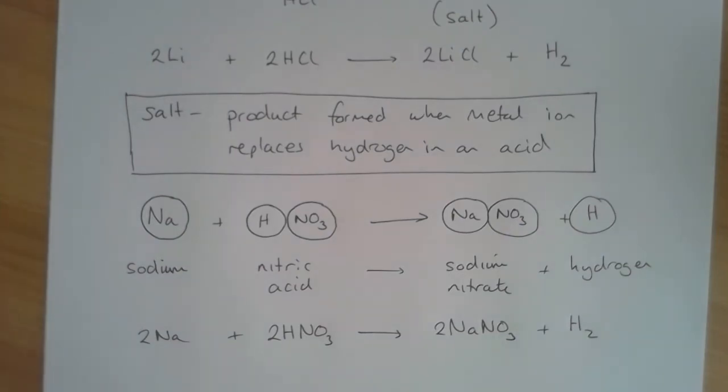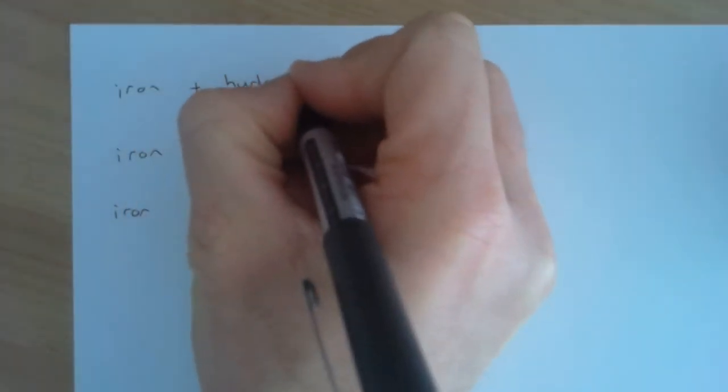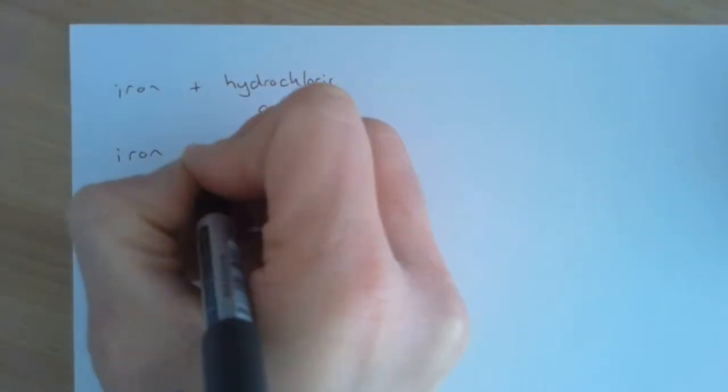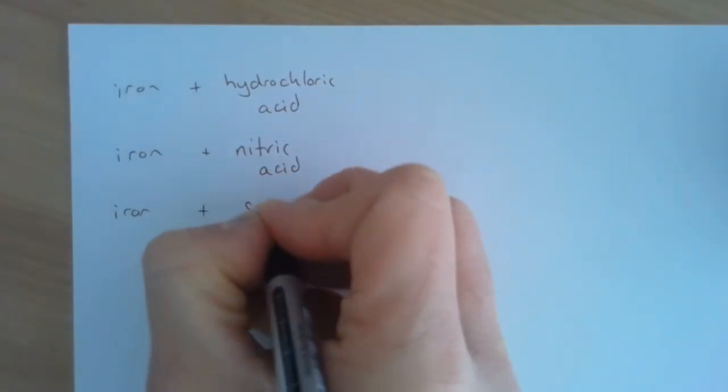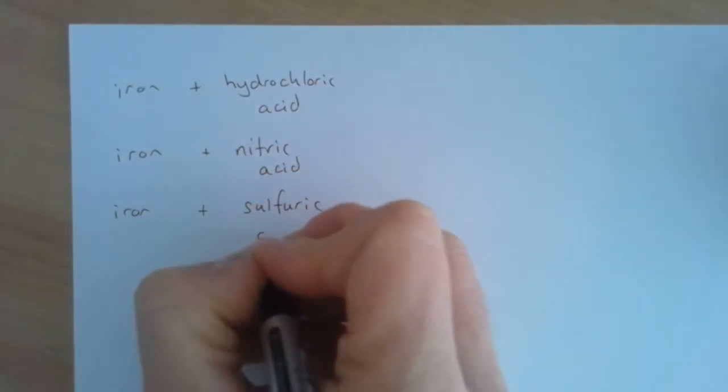There are three acids that we need to know about: hydrochloric acid, nitric acid, and sulfuric acid. For the rest of this video we need to be able to work out the name of the salt that is formed. We're going to have a look at three reactions of iron. We're going to look at the reaction with hydrochloric acid, with nitric acid, and with sulfuric acid.